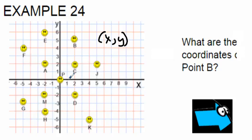So the X coordinate is 1, 2 — positive 2 — and the Y coordinate is positive 5. So we're going to write our answer as 2 comma 5, X coordinate first, Y coordinate second.